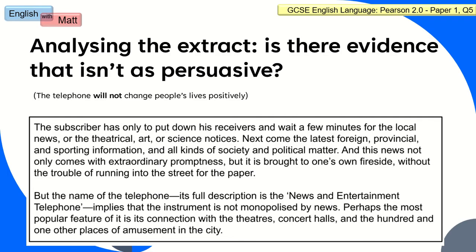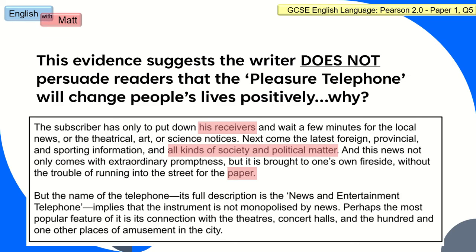Something else you can do in your evaluation question for Paper 1, Question 5 is actually argue that the writer is not successful in suggesting the telephone will change people's lives positively. Using the same extract, we can find three reasons why this telephone will not change people's lives positively. Evidence could include: 'his receivers,' suggesting a degree of sexism; perhaps some people can't access this information because they're not educated enough; and perhaps people might want to continue reading the paper because it's easier for them.